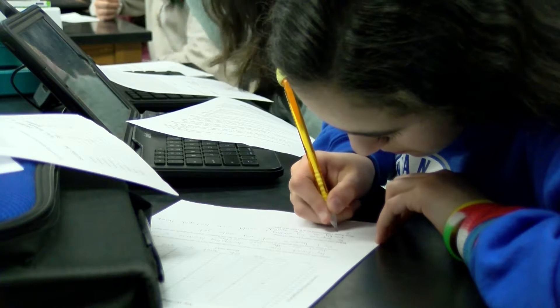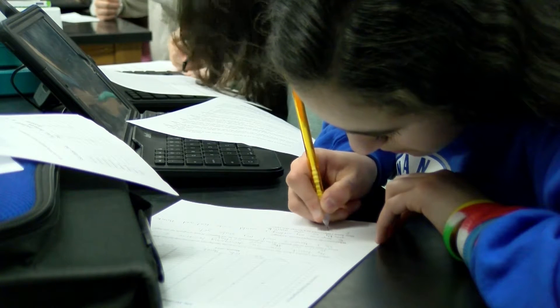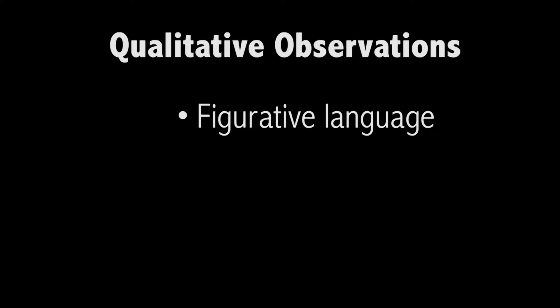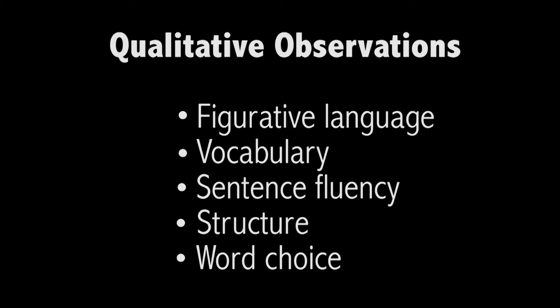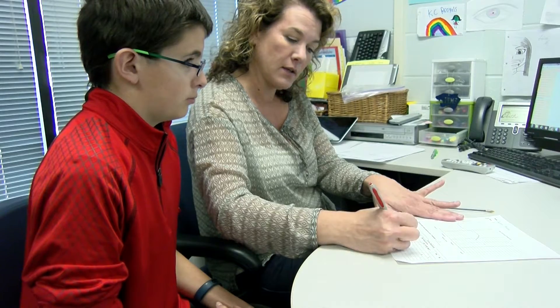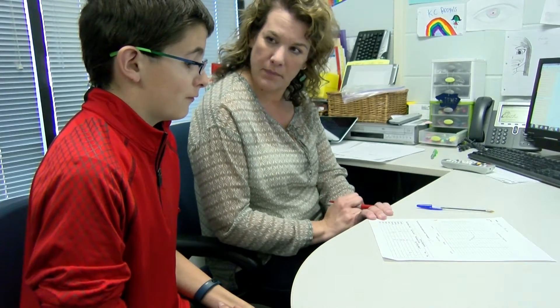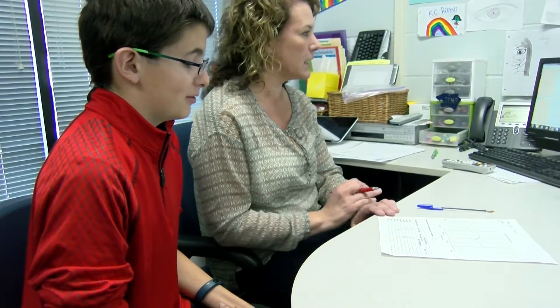Qualitative data is descriptive and observable. Here are examples of some qualitative observations that could influence writing goals: the use of figurative language, the use of specific vocabulary, variation in sentence types and length, more sophisticated sentence structure with embedded clauses, and minimal redundant word choices. In conjunction with having a quantitative goal, students can look at setting a qualitative goal. Teachers can refer to six-trait writing rubrics or common core state standards for qualitative measures.